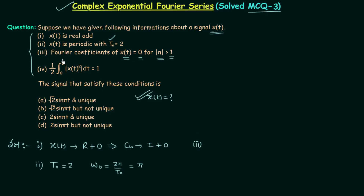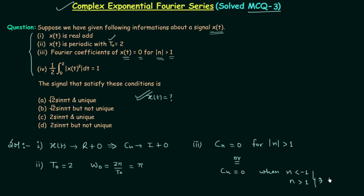The third information is very important. It says the Fourier coefficients of xt are equal to 0 for |n| greater than 1. So cn equals 0 when n is less than −1 and when n is greater than 1. This implies we have only three nonzero coefficients: c₋₁, c₀, and c₁, since n is an integer and between −1 and 1 there are only three possibilities.